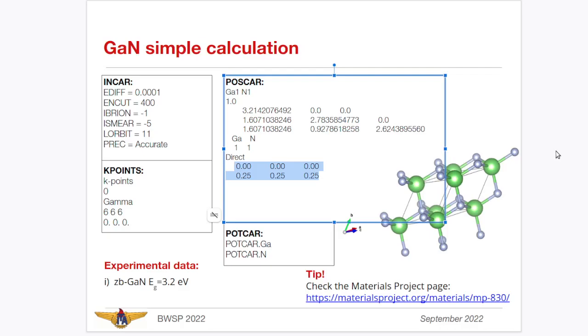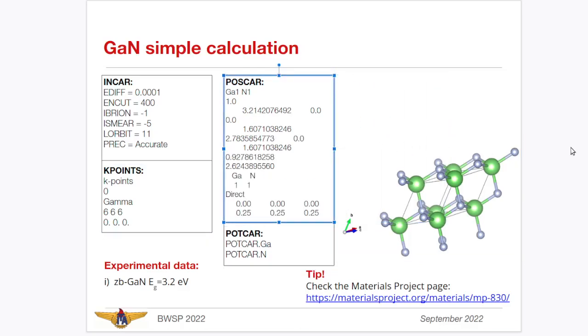KPOINTS. I will use automatic gamma grid with six points on each direction. The directions are the reciprocal lattice associated with this lattice that you provide on POSCAR. And VASP already does all the symmetry operations and so on. This is a very efficient code. And then, POTCAR, I use standard files for the gallium atom and nitrogen atom. If you search in the literature, you can see that zinc blend gallium, which is this one that we are described with this POSCAR file, you also have a wurtzite structure, but zinc blend is cheaper computationally speaking.